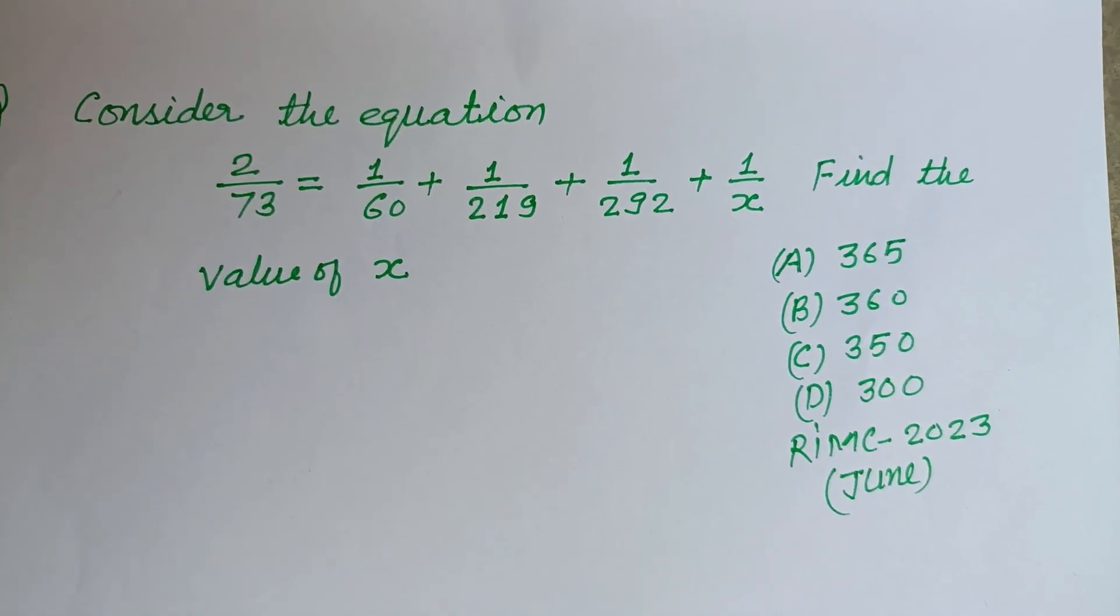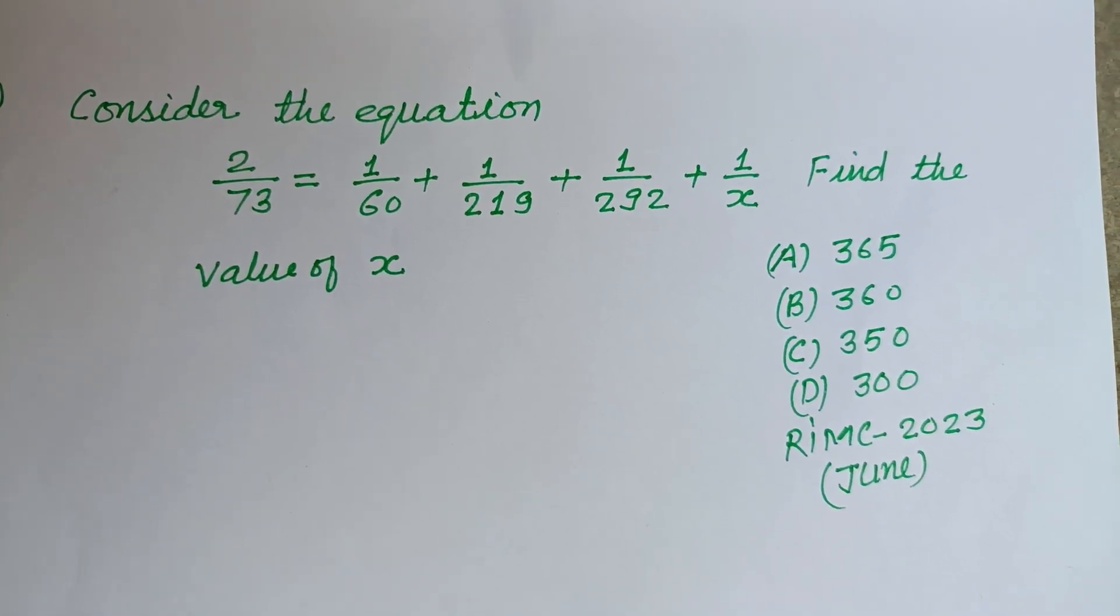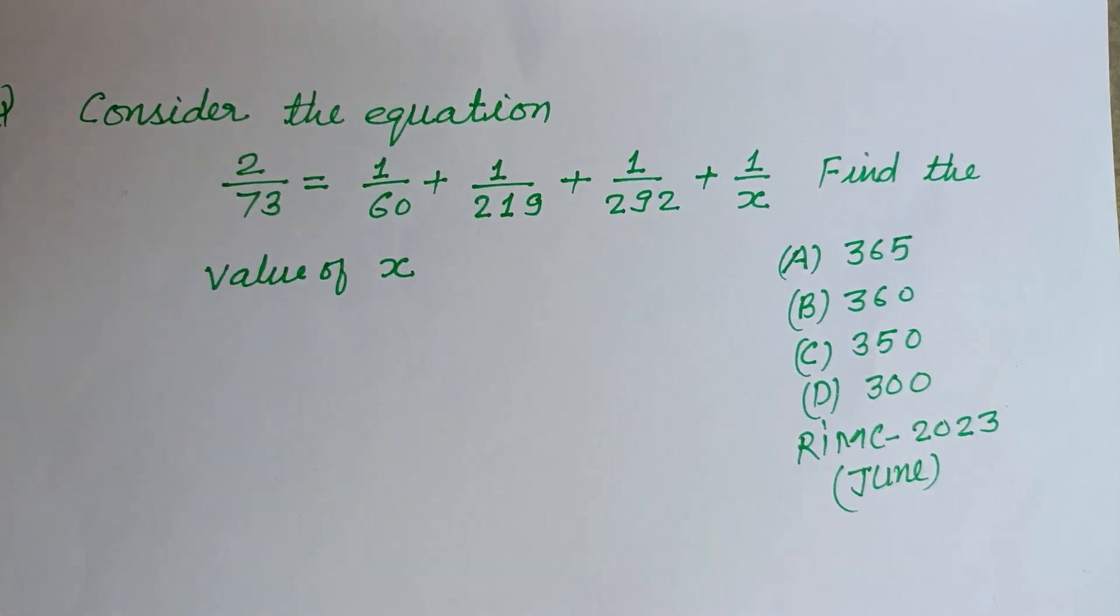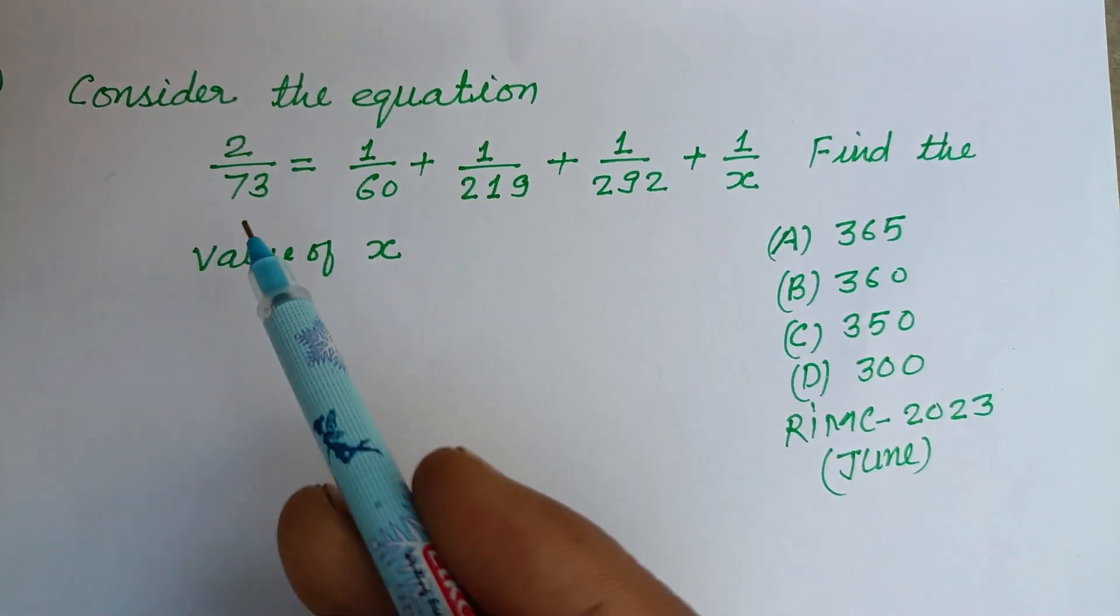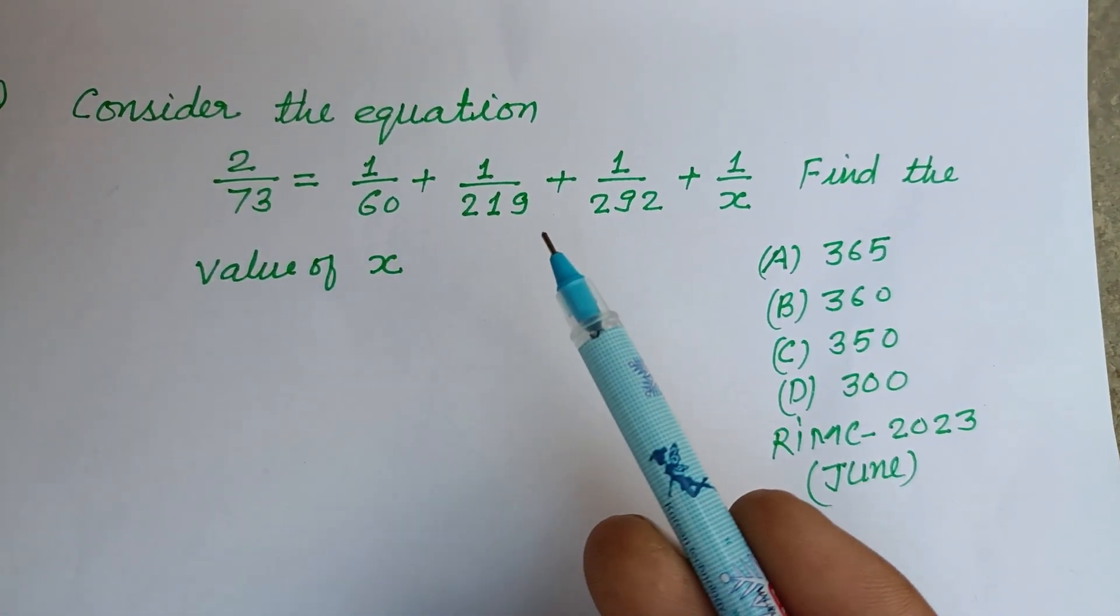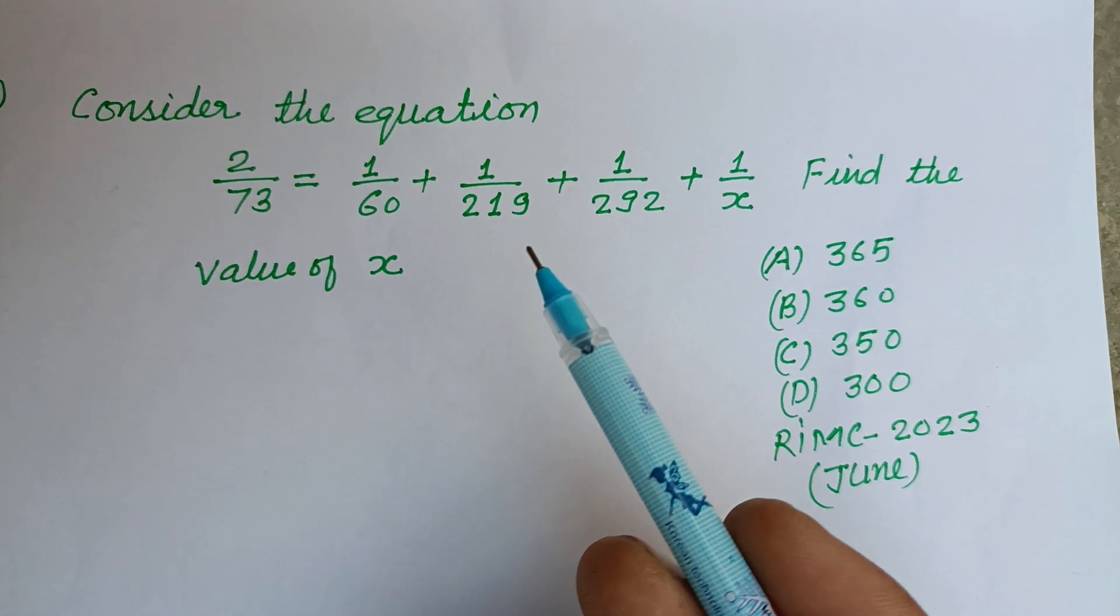Hello viewers, warm welcome to this YouTube channel. This is a question from RIMS 2023 June attempt. Consider the equation: 2/73 = 1/60 + 1/219 + 1/292 + 1/x. Find the value of x.